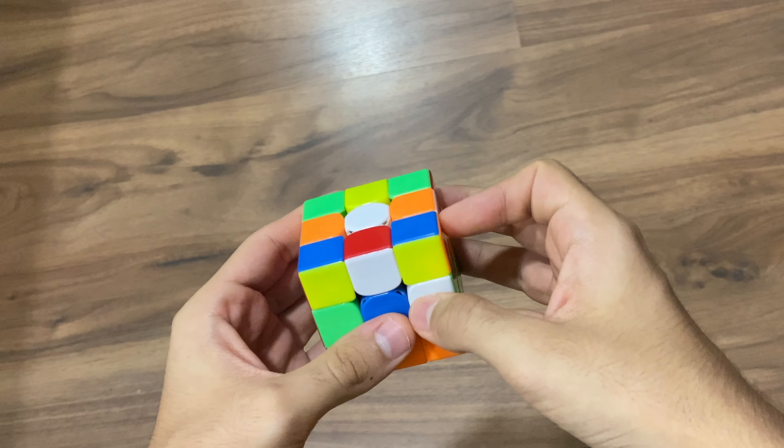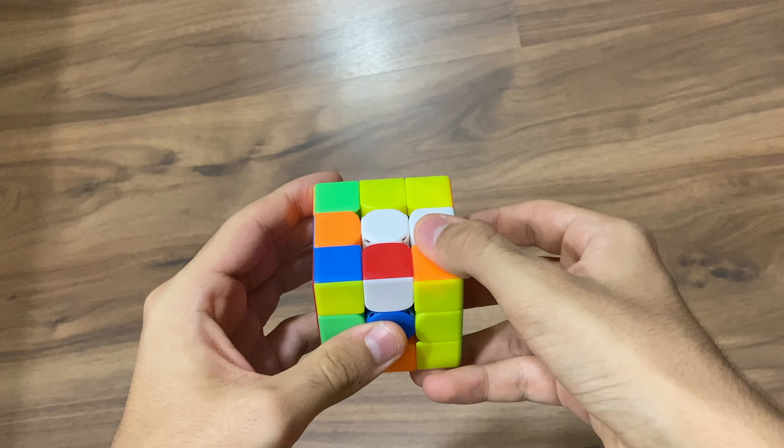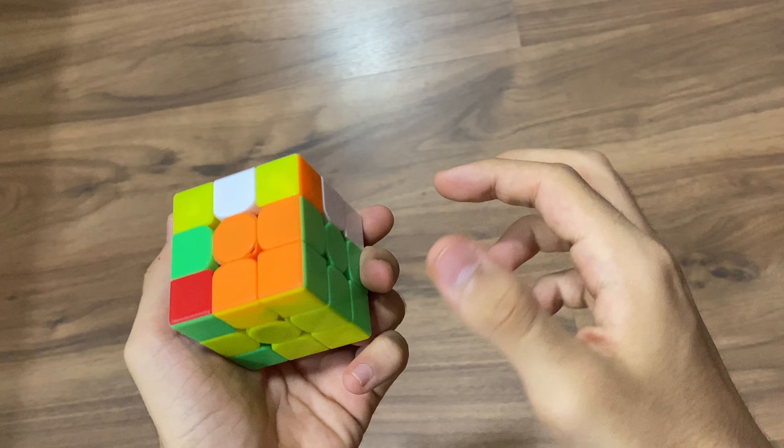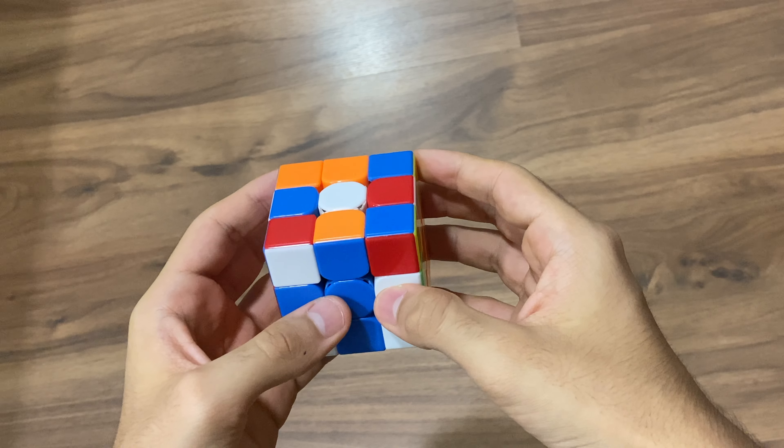That'll be a double X-cross in the back here. So what I just did is R prime, U prime, L2, and then D. And as you can see it's a double X-cross.